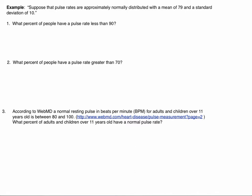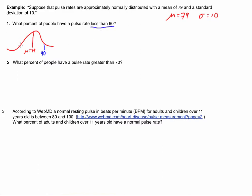Here's another example. Suppose that pulse rates are approximately normally distributed with a mean of 79 and a standard deviation of 10. Our first question is: what percent of people have a pulse rate less than 90? Let's draw the picture — I can't stress that enough. We mark our mean of 79 in the middle and also mark the observation we're looking for, which is 90. I'm looking for the percent of people with a pulse rate less than 90, so I'm looking for the area to the left of 90.